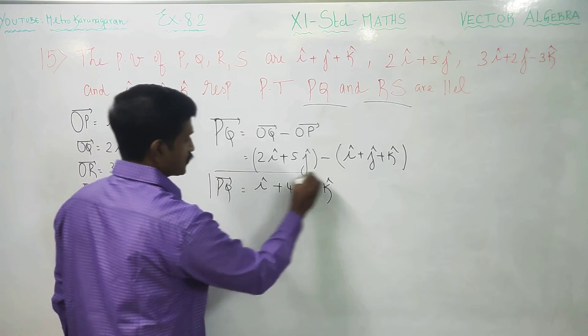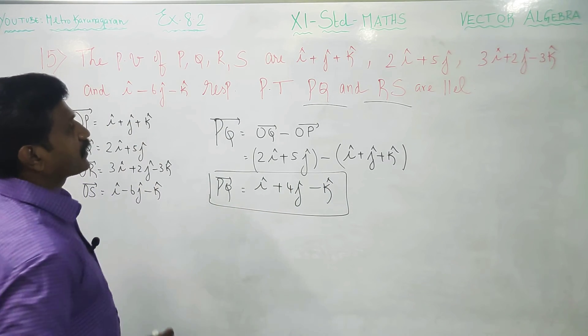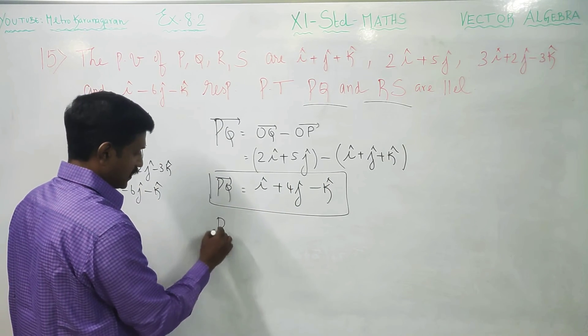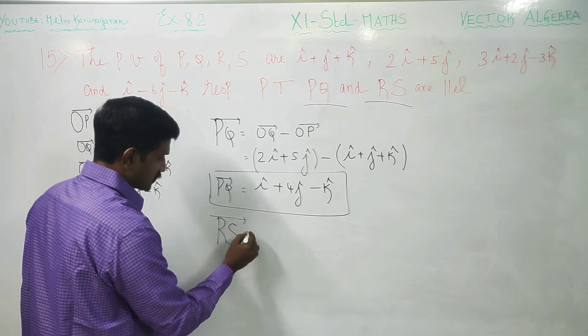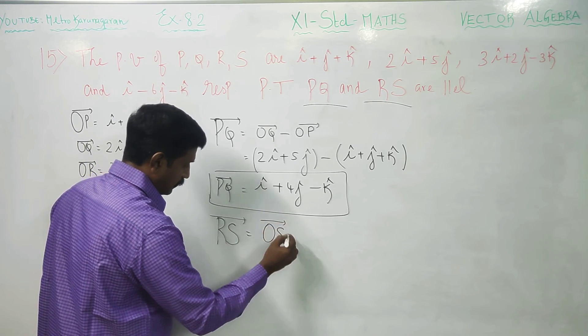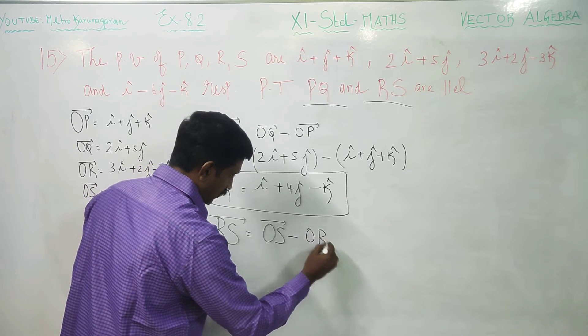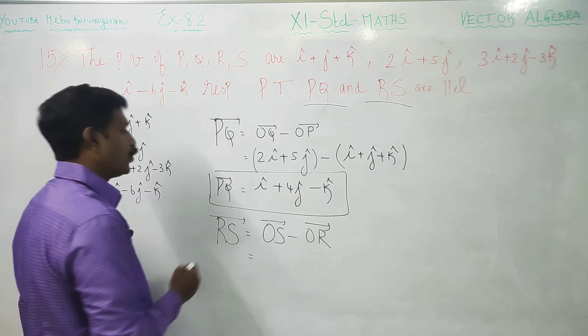This is my PQ vector. After finishing PQ, I am next entering into RS vector. RS vector is OS vector, terminal minus starting. Starting is OR vector.